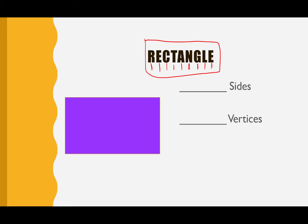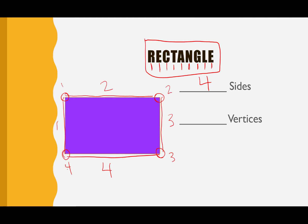Let's go over our sides and vertices. We have one side, two, three, and four. So our rectangle has four sides. How many vertices do you think it has? Let's count: one, two, three, four. There are four vertices also.